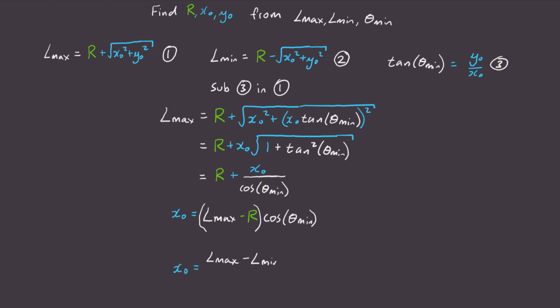Subbing in the value for our radius simplifies to this equation, and there we have it. We found an expression for x0 in terms of our l data.